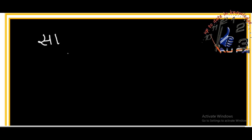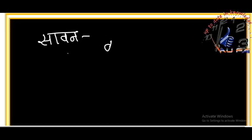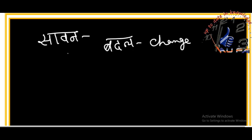Shavan — you already know 'shah.' Here with the 'aa' matra: shah becomes shavan. Monsum — monsoon is one of the months which falls under July. Badal — badal means cloud. If I remove the matras: badal means change.